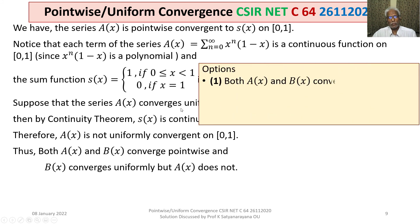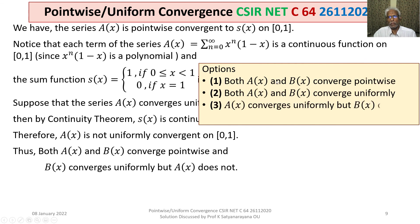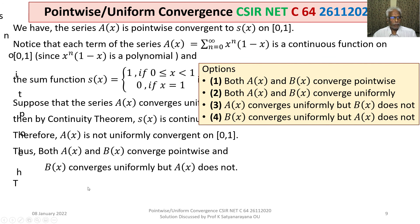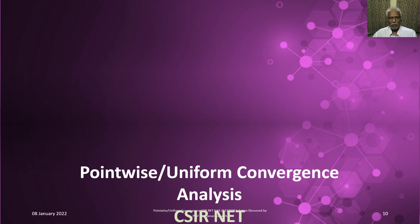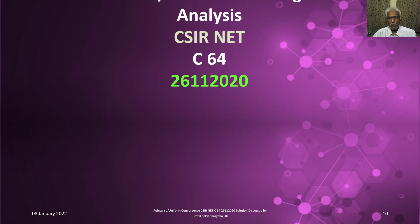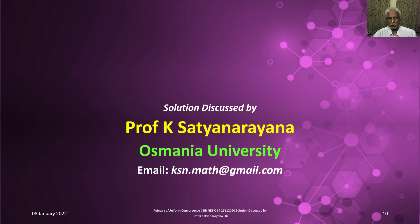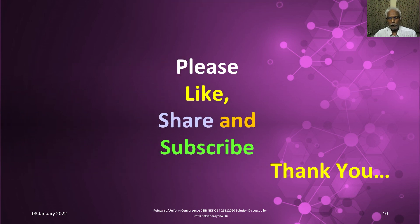Thus both A(x) and B(x) converge pointwise, B(x) converges uniformly, but A(x) does not. Option 1 — both A(x) and B(x) converge pointwise — is true. Option 4 — B(x) converges uniformly but A(x) does not — is also true. Options 2 and 3 are not true. That concludes the solution of the problem on pointwise and uniform convergence of series of functions. I hope you have understood the solution and will work out further problems related to this topic.